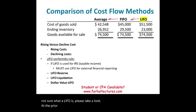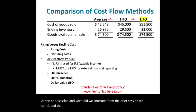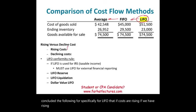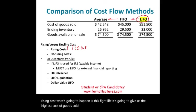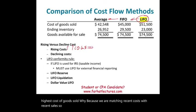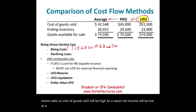What did we conclude from the prior session? We concluded that specifically for LIFO, if costs are rising, LIFO is going to give us the highest cost of goods sold. Why? Because we are matching recent costs with recent sales. So cost of goods sold will be high. As a result, net income will be low, and as a result, your taxes are low.